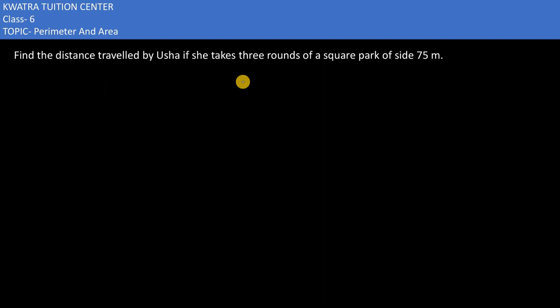Here in this problem it says find the distance traveled by Usha if she takes three rounds of a square park of side 75 meters. Now what is the information given here? There is a square park, and the sides are 75 meters. Because it's a square park, all the sides are equivalent to each other.